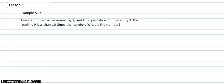In Lesson 5, we're looking at word problems and fractional parts of a number. The first example is a word problem, and we're going to take the word problem and set it up into an equation, and then we'll solve for the missing number.